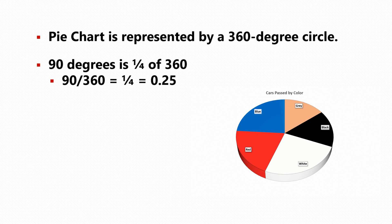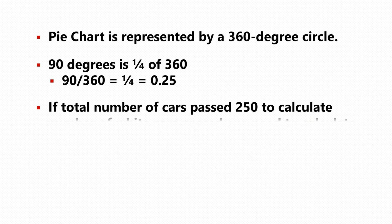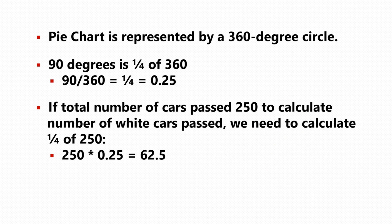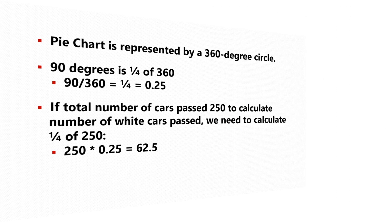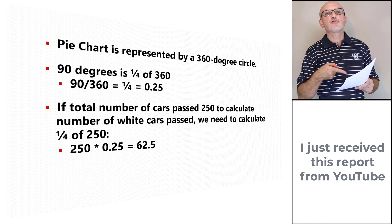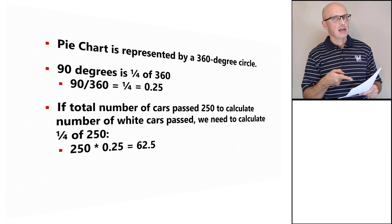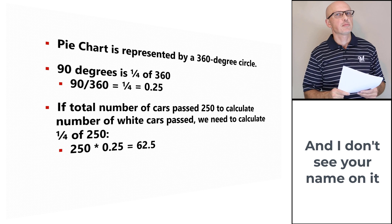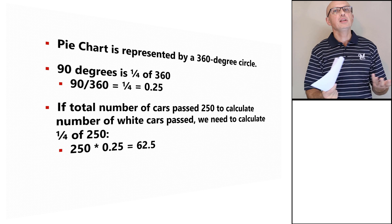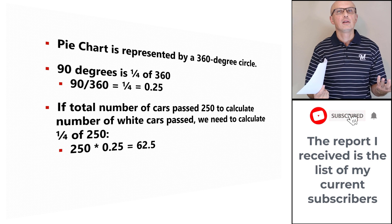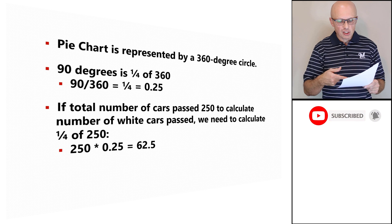To do the calculation, divide 90 by 360, which equals a quarter, or 0.25. We then build the proportion: if 250 total cars are represented by the full 360-degree circle, the number of white cars is 250 × 0.25, which equals 62.5.